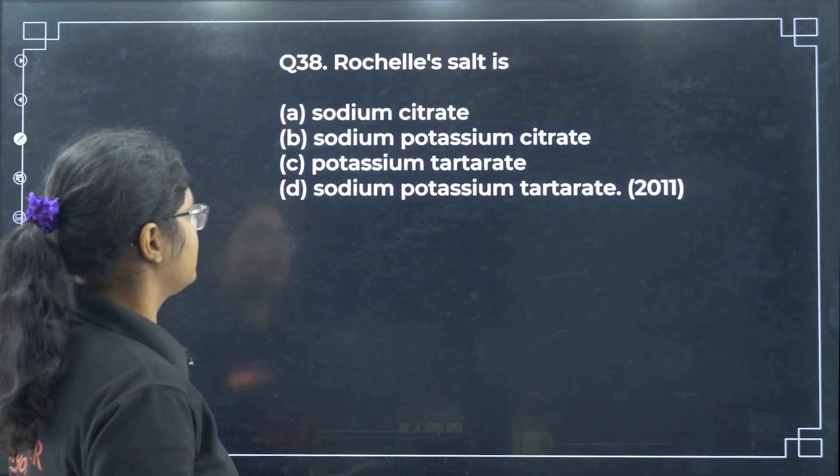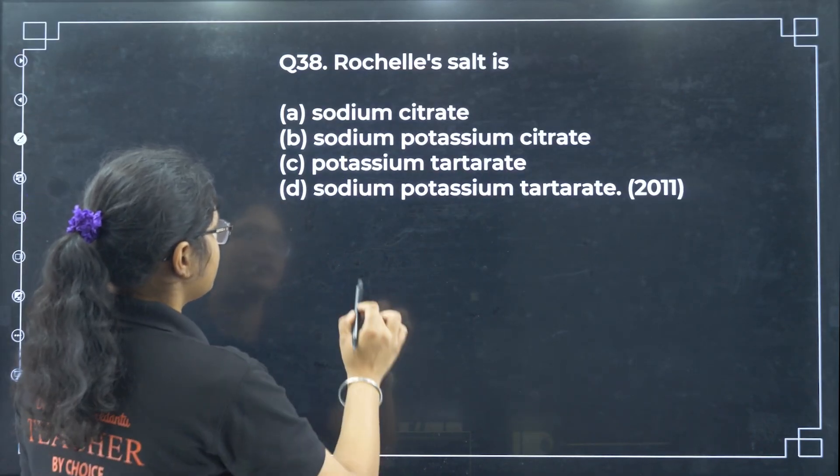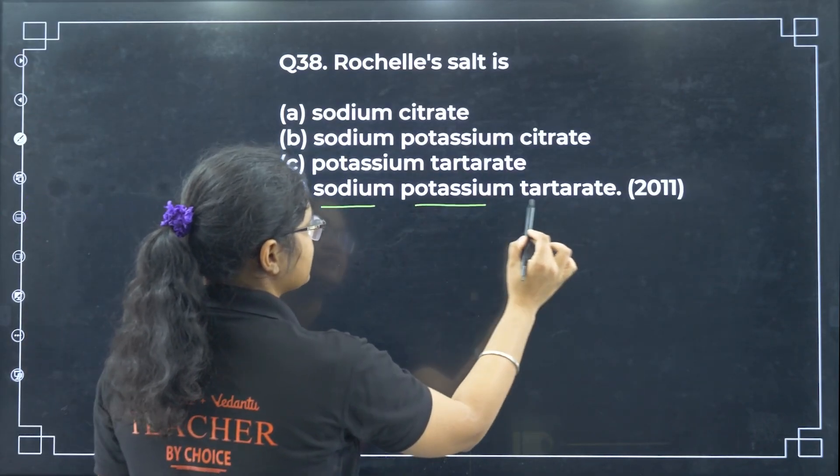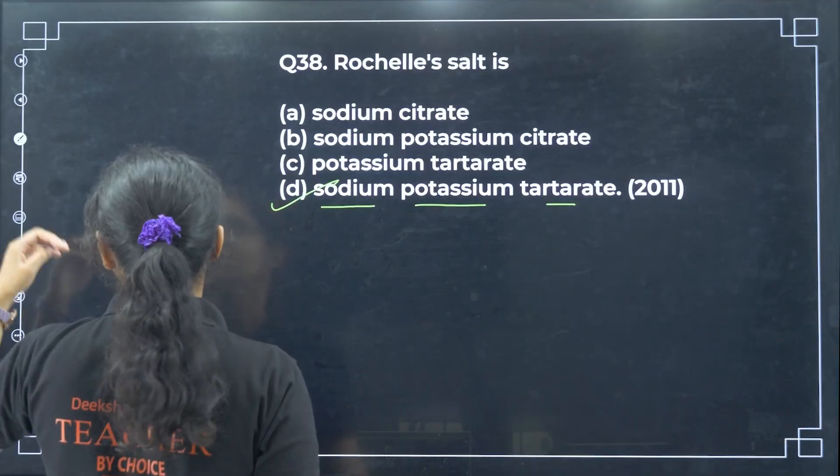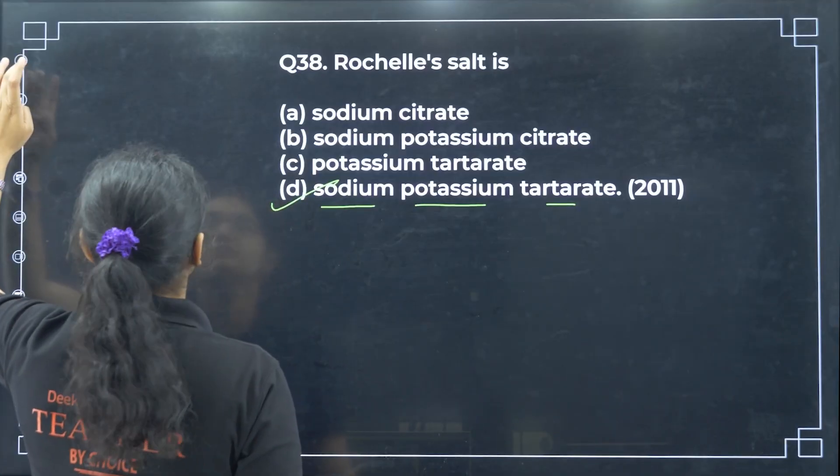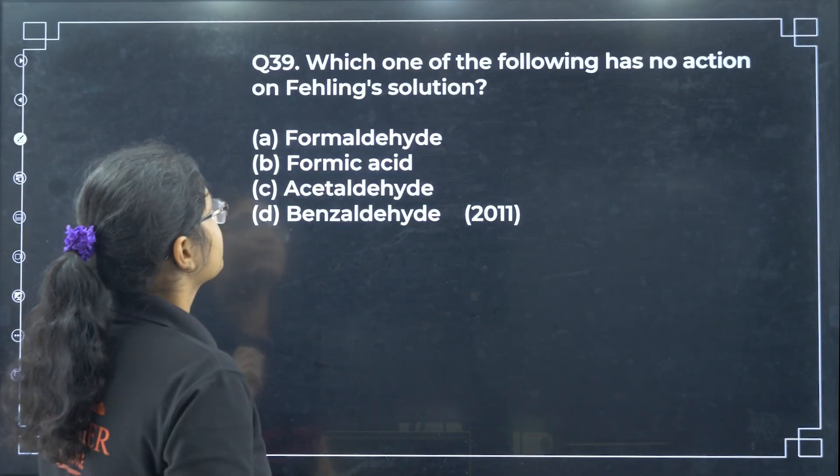Rochelle salt is sodium potassium tartrate — option D — and it is used in Fehling's solution.